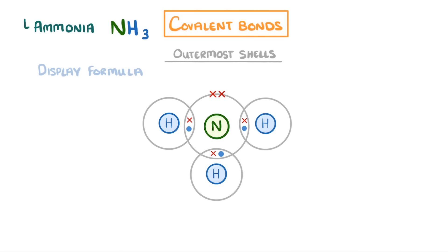Or if we wanted the displayed formula instead, we would just rub out all of the shells and electrons, and instead place lines wherever electrons were being shared, which just means placing a line wherever there was a covalent bond.